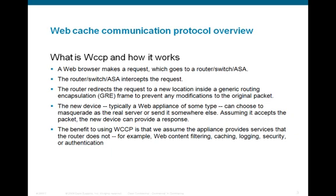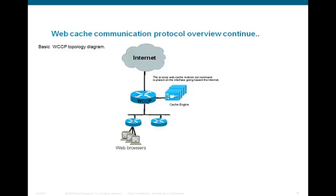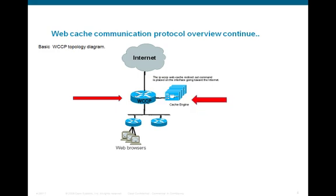The benefit to using WCCP is to leverage services that the router does not provide — for example, web content filtering, caching, logging, and integrating with AD servers using NTLM or LDAP. Looking at a sample topology, the WCCP router intercepts traffic on inbound going to outside of the network and redirects it to the cache engine, where it's either served locally or fetched from the network.